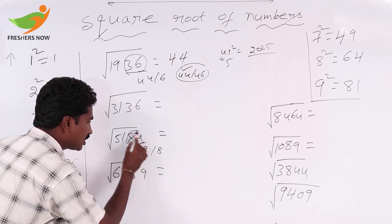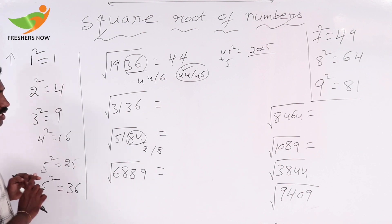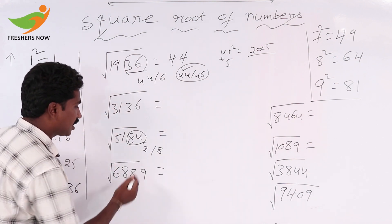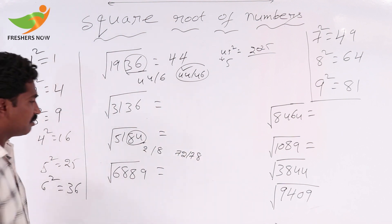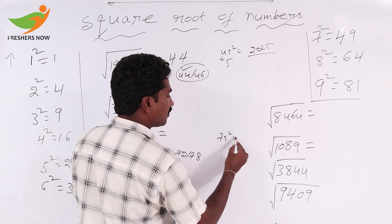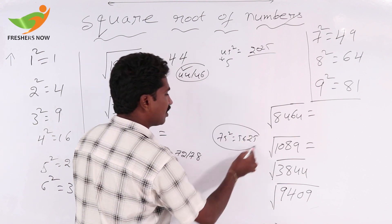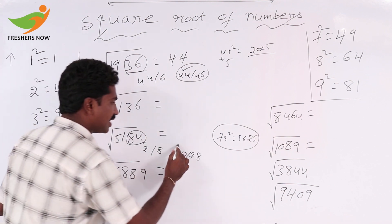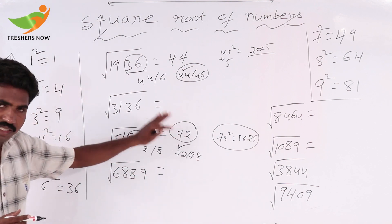Keep 2 digits away. 51 is there. Observe: 6 squared is 36 and 7 squared is 49. So we can take either 72 or 78. In between these two, 75 is there. 75 squared: 5 squared is 25, and 7 times the next number 8 gives 56. Since 51 is less than 56, we can take 72. So the square root of 5184 is 72.